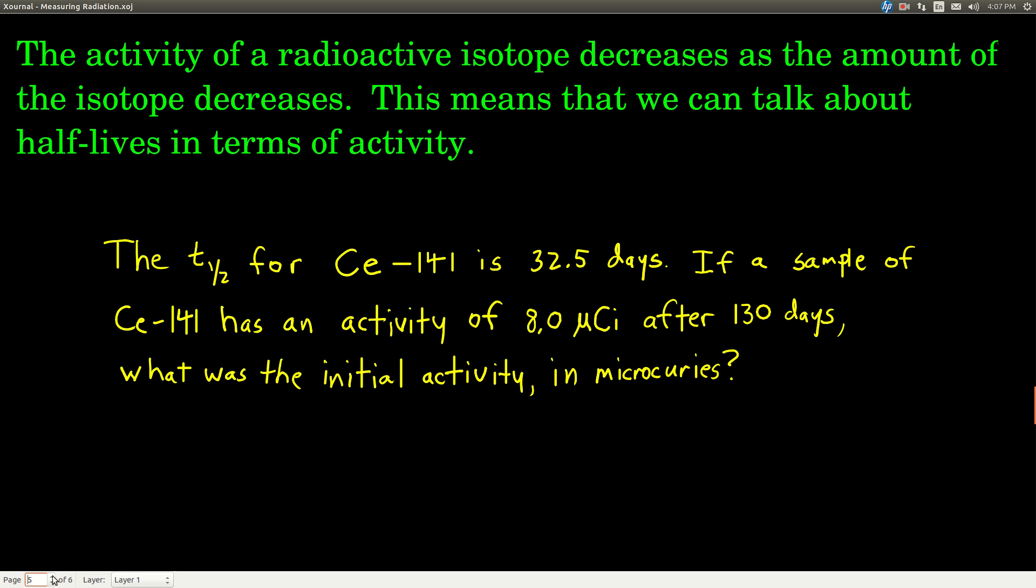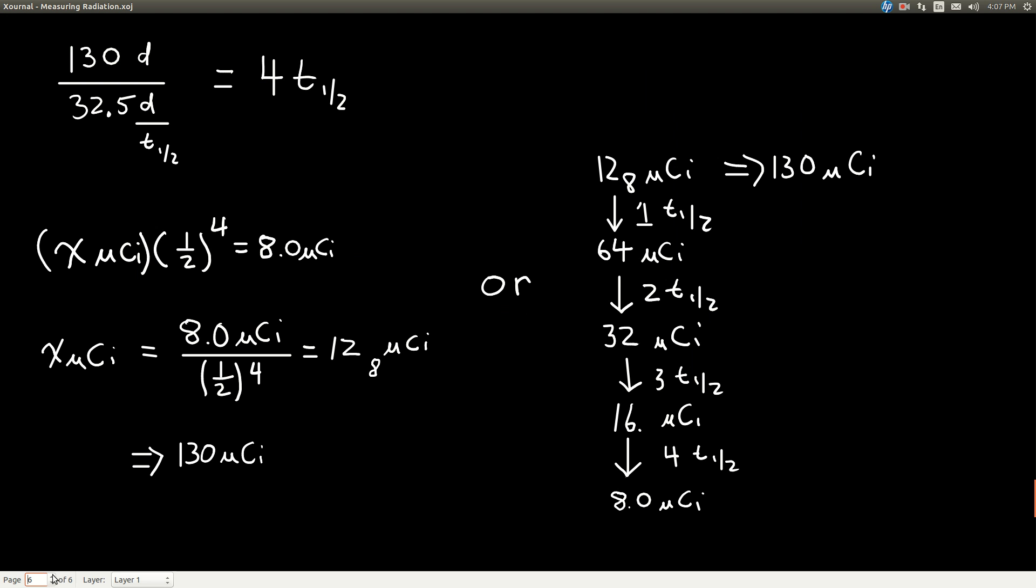Well, we set it up just like we did with the other half-life problems, and there's two ways we can do it. But first, no matter what, we have to find out how many half-lives have gone by. Well, 130 days have passed, and we know that there's 32.5 days per every one half-life, so if you just divide the two numbers, it tells us that four half-lives have gone by.